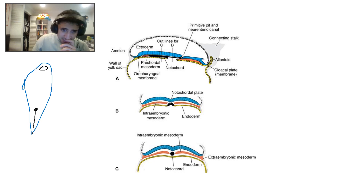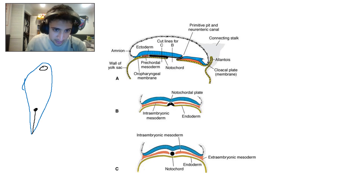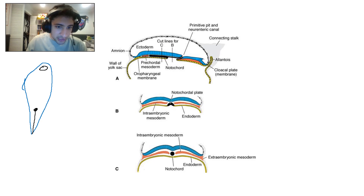You now have endoderm, mesoderm, and ectoderm with the notochord in the middle — that is the axis. All these layers are going to differentiate with respect to the notochord. There is a concentration gradient of developmental signals emanating from the notochord.